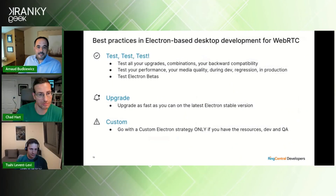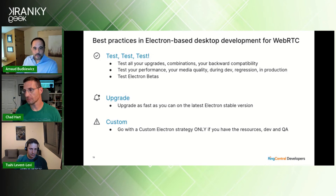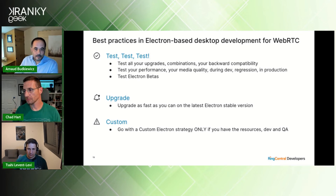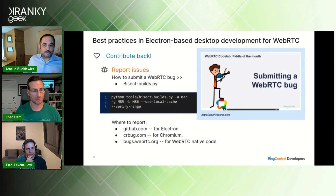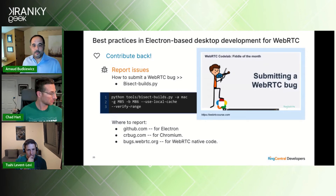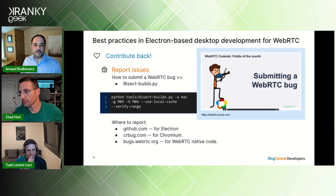Now that you've mastered WebRTC bug tracking in Electron and Chromium, let's talk best practices. Test, test, test your upgrade combinations, backward compatibility, performance, and media quality — during dev, regression, and production. Also test Electron beta versions just like you test beta and canary versions of Chromium for your web app. Upgrade as fast as you can to the latest stable Electron version, and only pursue a custom Electron strategy if you have the resources. Contribute back — you don't want to maintain your own build for too long. Report issues early and use tools like the handy bisect Python script that lets developers find the exact version of Chromium that introduced a bug.